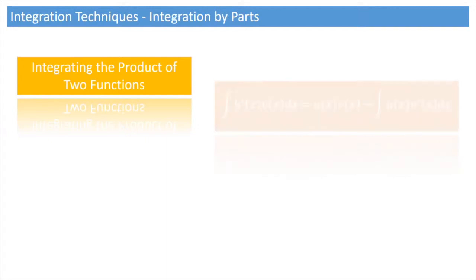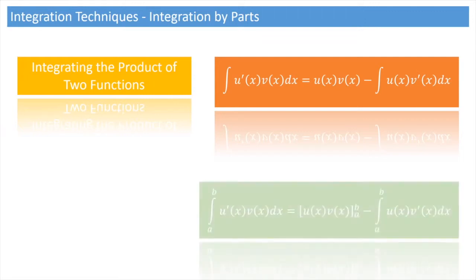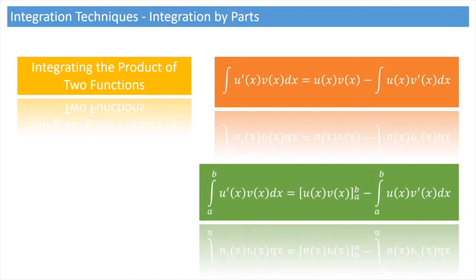Here's the formula. The integral of u'(x) times v(x) is equal to u(x) times v(x) minus the integral of u(x) times v'(x). We can also write this in terms of definite integrals: the integral from a to b of u'(x) times v(x) is equal to u(x) times v(x) evaluated from a to b, minus the integral from a to b of u(x) times v'(x).